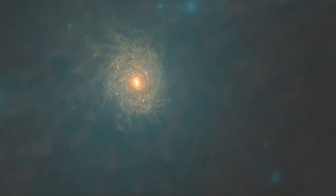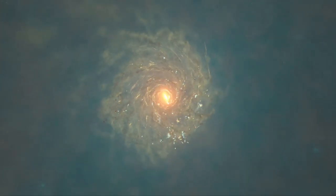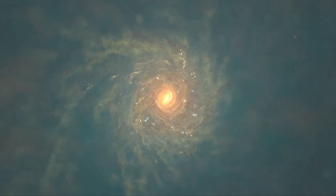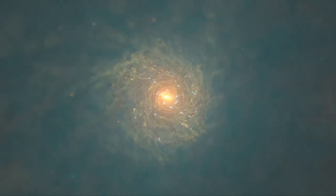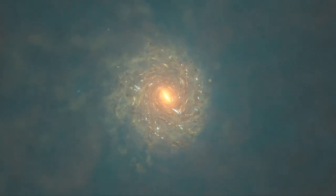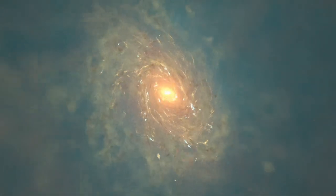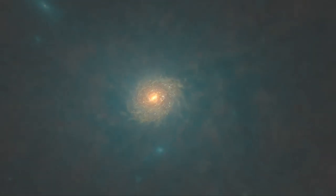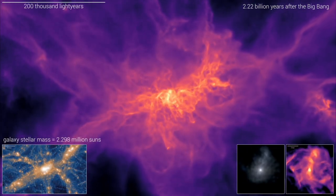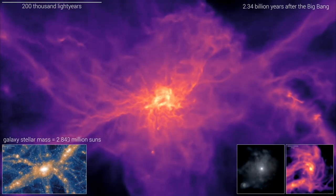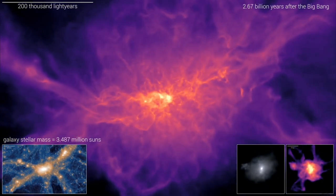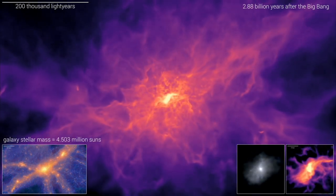Radiation hydrodynamics simulations employ computational methods to explore how radiation interacts with matter. These simulations are particularly valuable for studying the epoch of reionization in the early universe when redshift was high. Various numerical techniques are utilized for radiation hydrodynamics, including ray tracing, Monte Carlo methods, and moment-based approaches. Ray tracing involves tracing individual photon paths through the simulation and calculating their interactions with matter at each step. While computationally intensive, this method can yield highly accurate results.